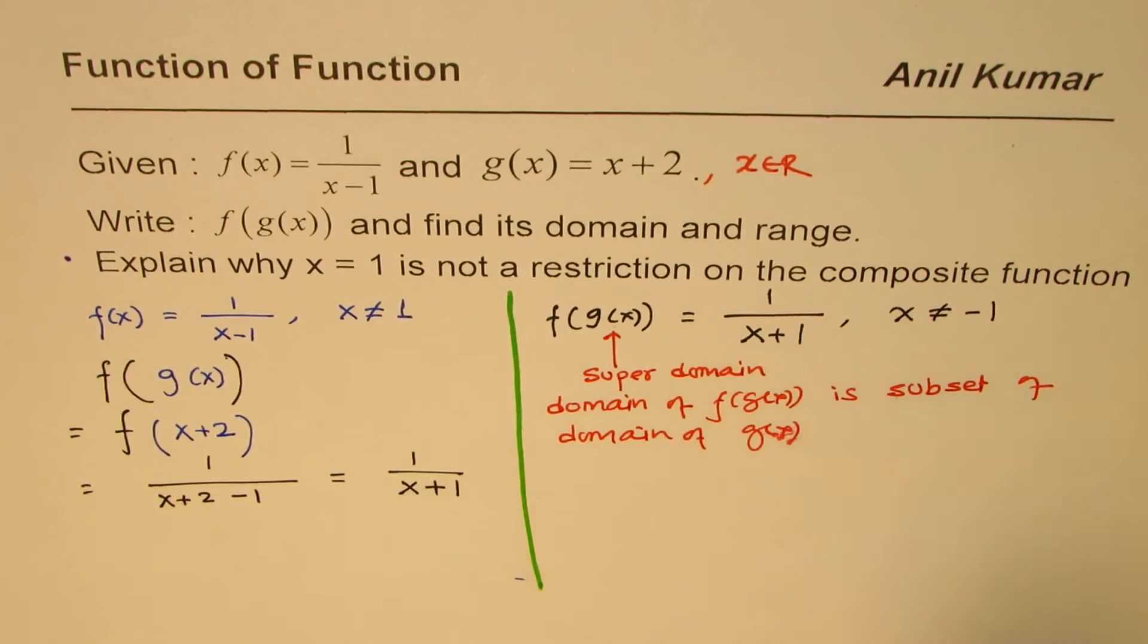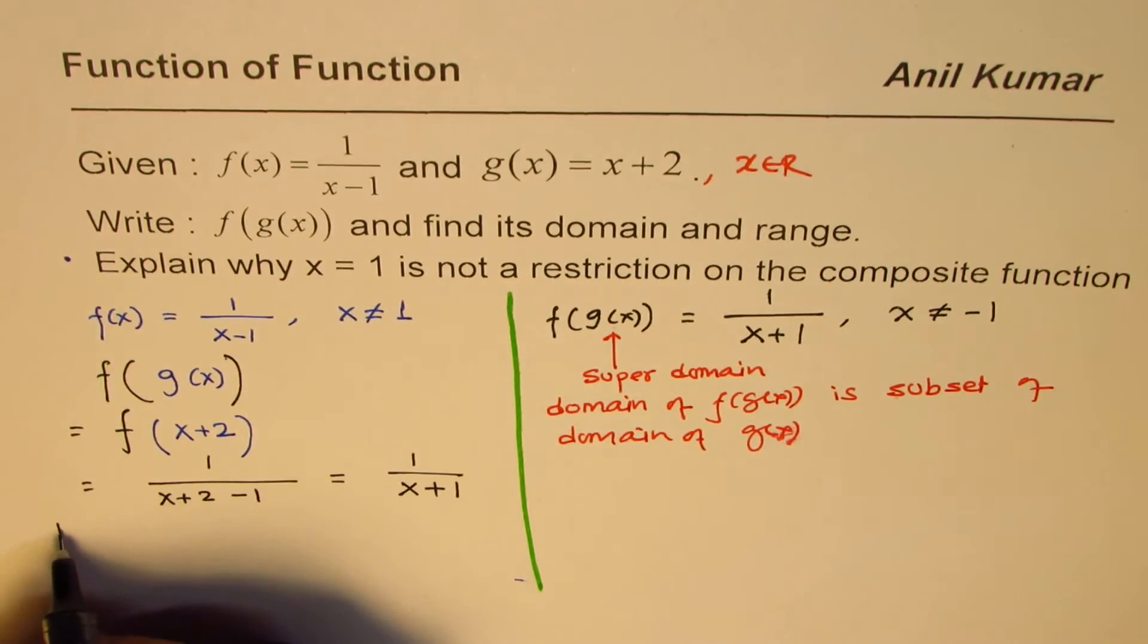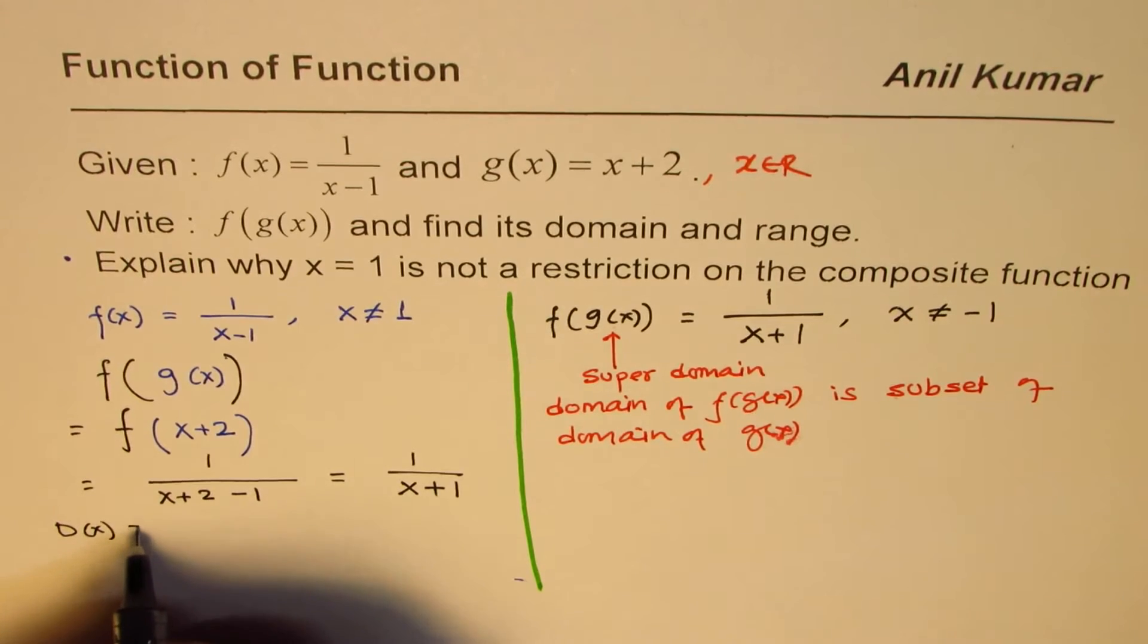the final product, which is 1/(x+1). You get the idea? The domain here is that x is not equal to -1, but all of the real values. Let me write down the domain here. Domain equals